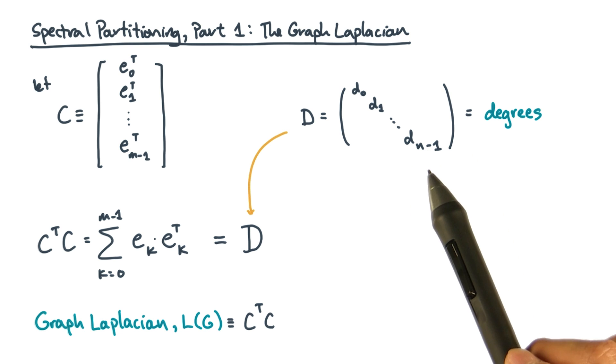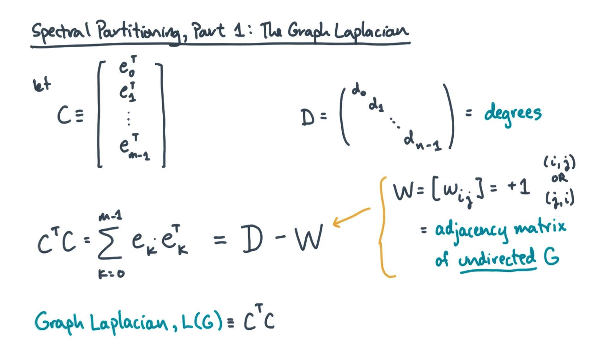The off diagonals mark all the edges. That's basically just the adjacency matrix of the undirected form of the graph. Remember, the adjacency matrix would have a positive one anywhere there's an edge, either connecting ij or ji. And of course, to get minus ones in the off diagonal positions, we'll subtract the adjacency matrix.